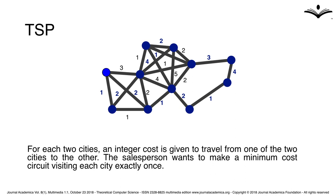For each two cities, an integer cost is given to travel from one of the two cities to the other. The salesperson wants to make a minimum cost circuit visiting each city exactly once.